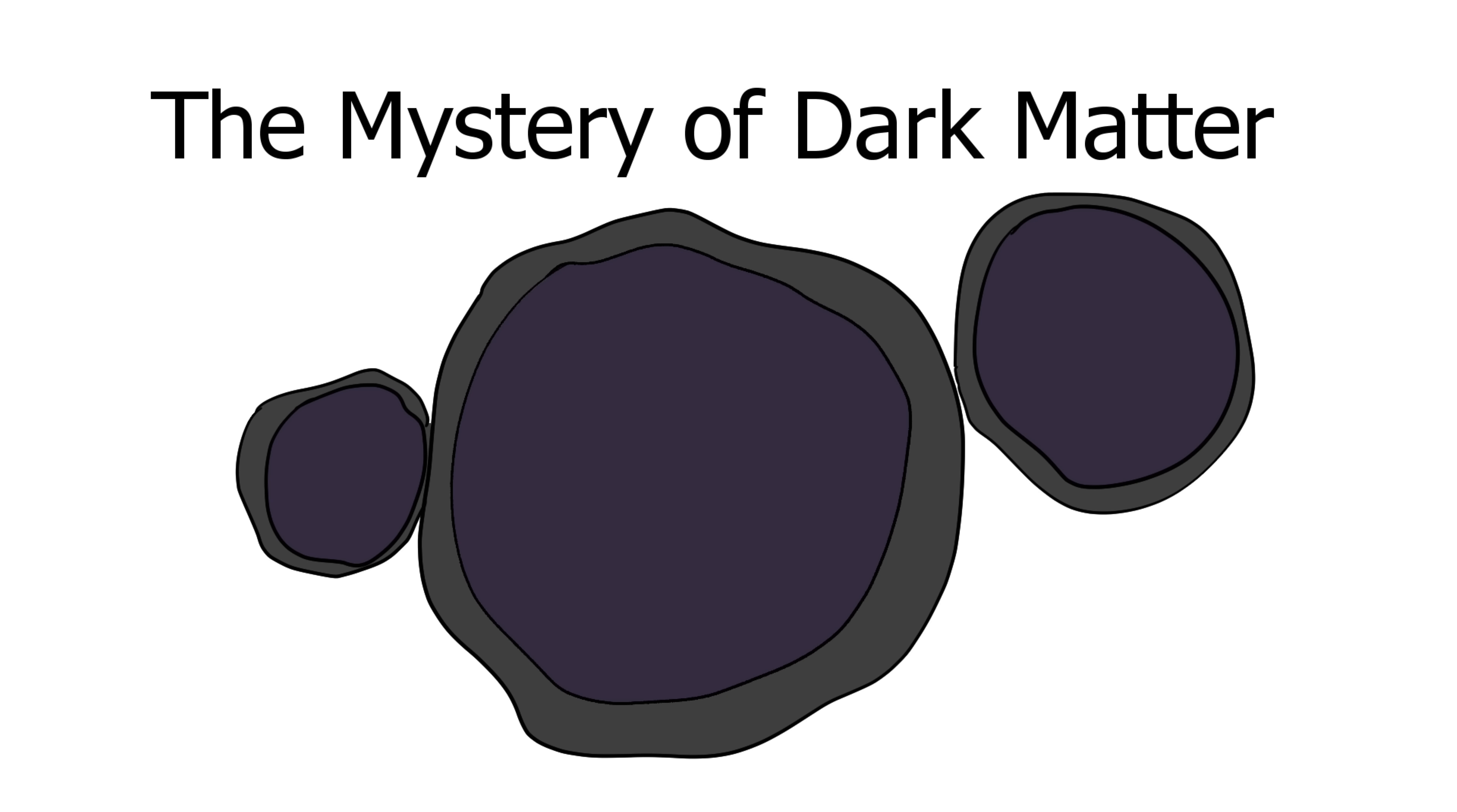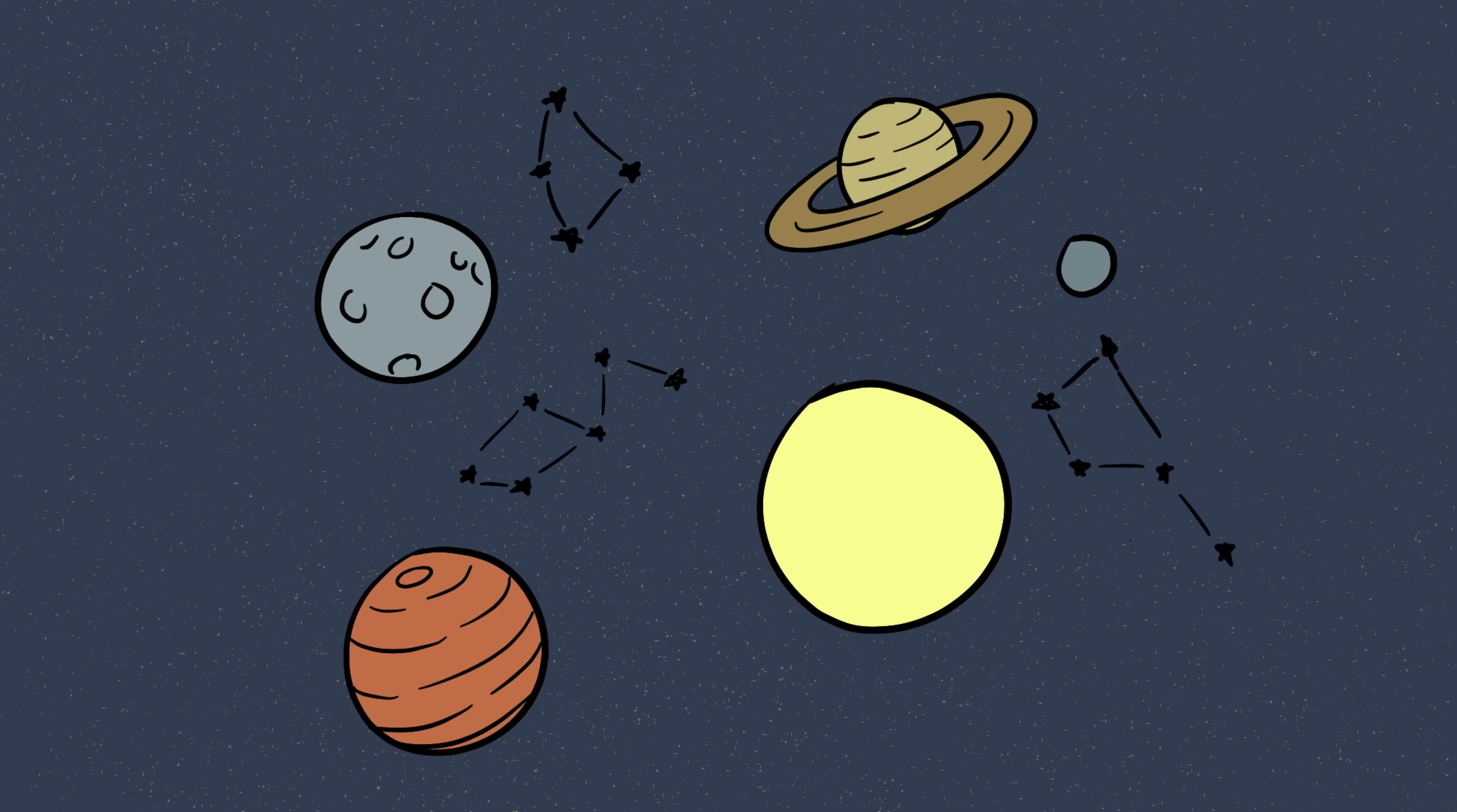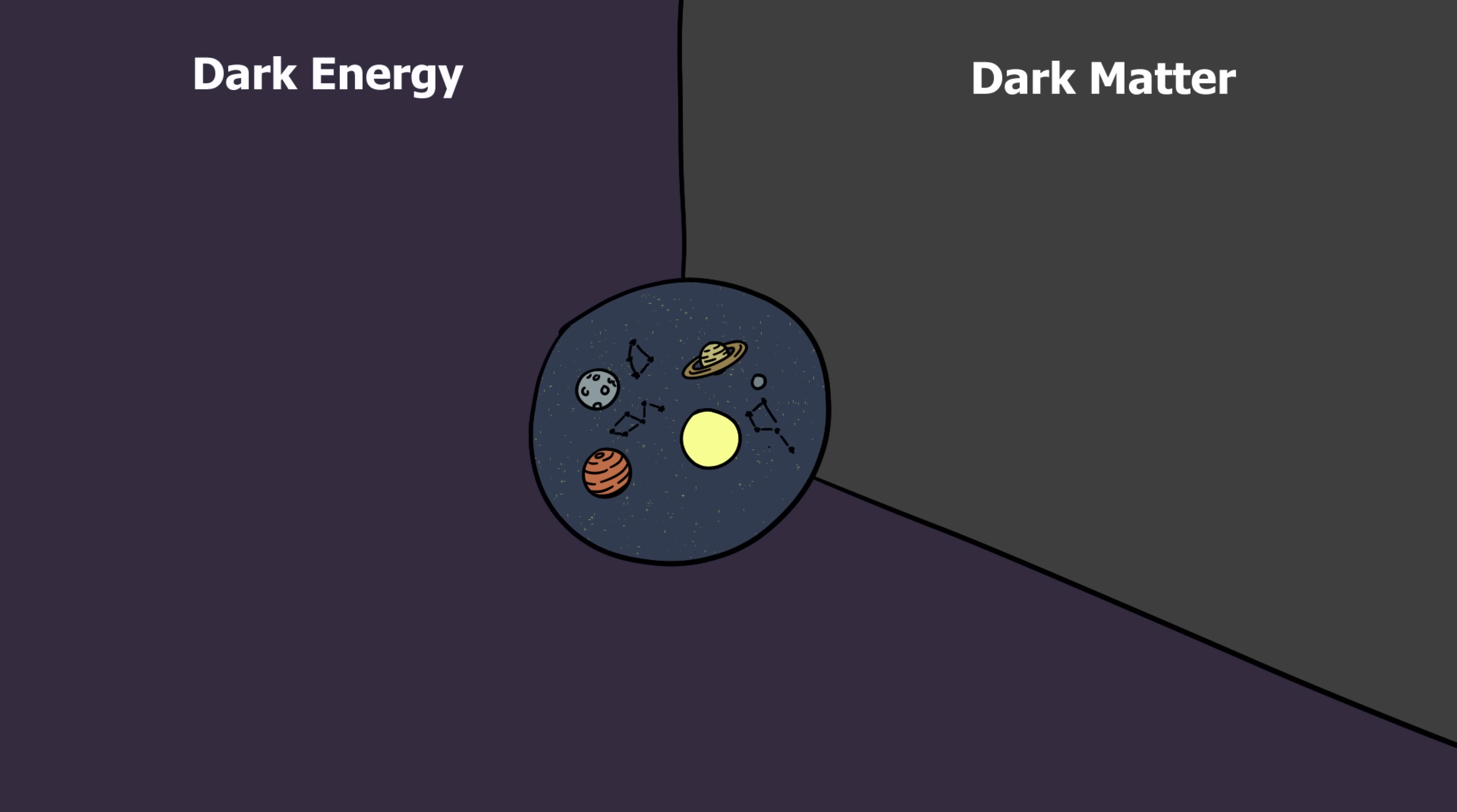Number six, the mystery of dark matter. Right now, everything you can see, stars, planets, galaxies, you, me, makes up less than 5% of the universe. The rest is invisible. About 27% is what we call dark matter, and 68% is dark energy.